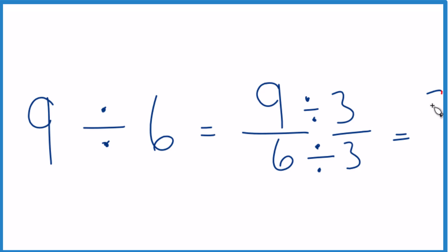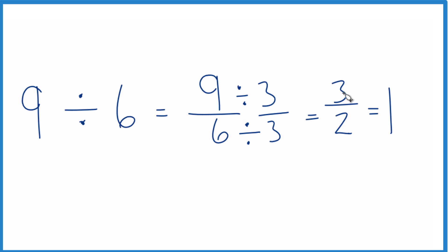3 goes into 9 three times, and it goes into 6 two times. And you could change that to a mixed number because 2 goes into 3 once with 1 left over, and we move the half across, 1 1/2. So you could say 9 divided by 6 is 1 1/2, which is equal to 1.5.